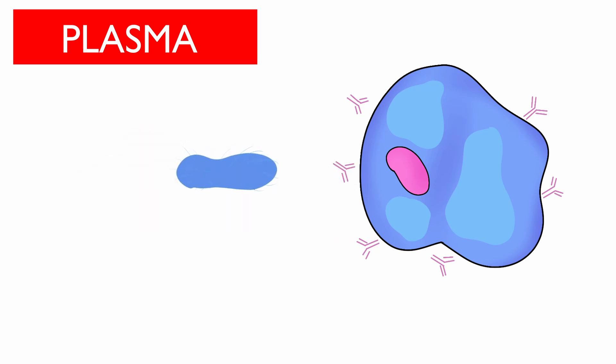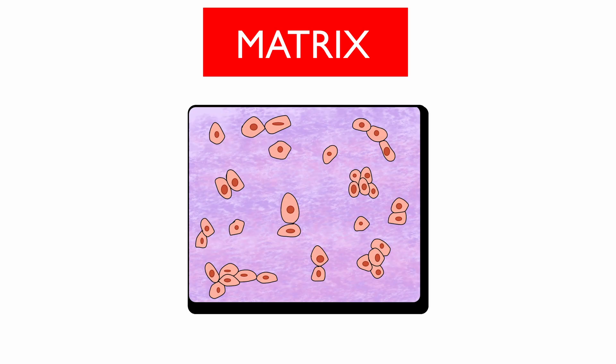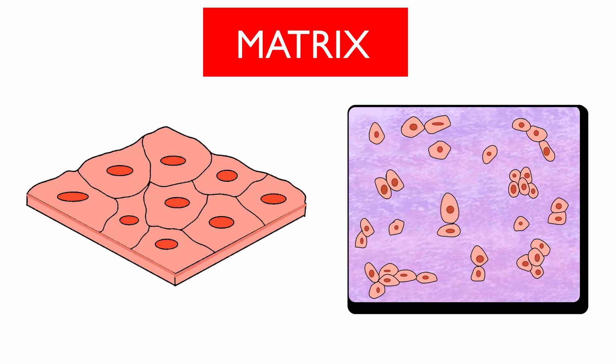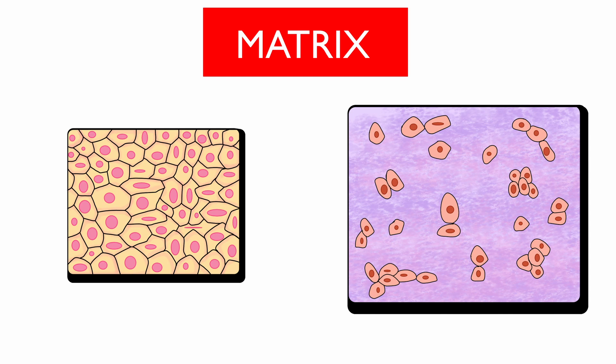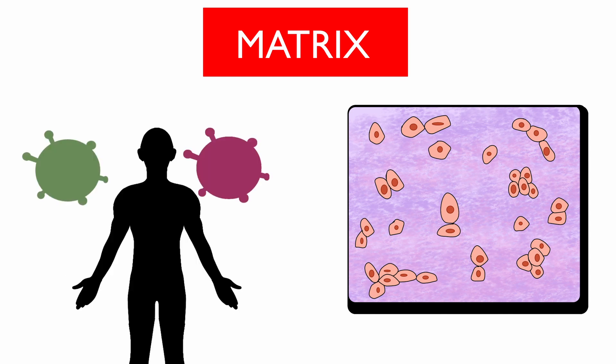We will now move on to the second component of connective tissue: the matrix. Matrix plays a major role in providing structural support to the connective tissue. It helps keep the cells together, helps the cell communicate, helps in developing and repairing the tissue, and acts as a selective barrier to the external environment.